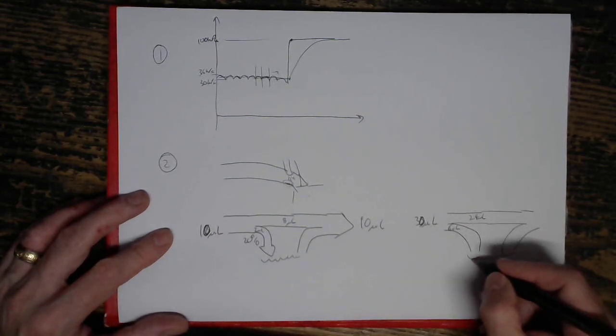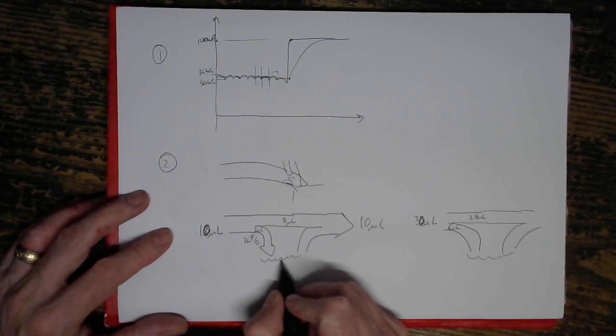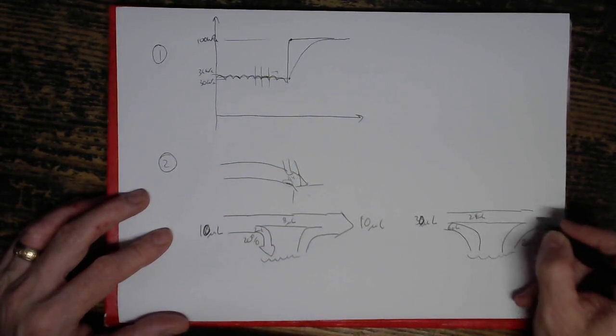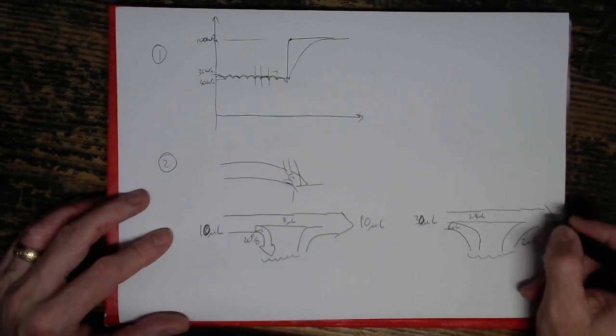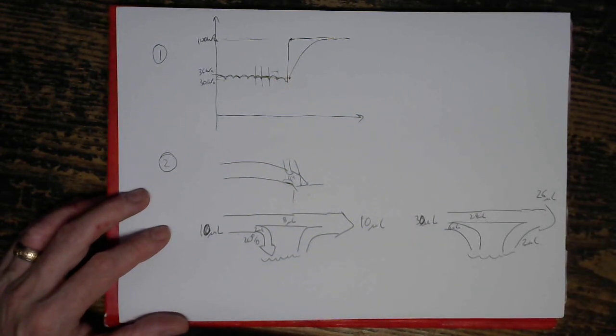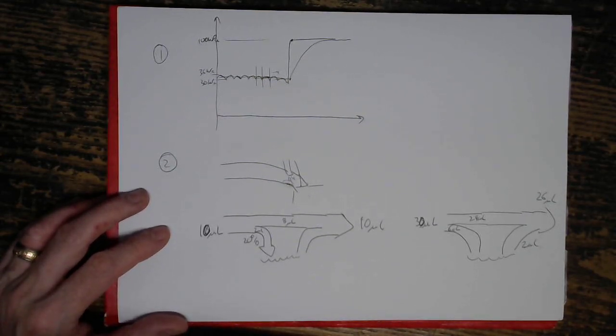Now because this puddle is still the same mass as it was here, the same amount is evaporating. So you only get 2 microlitres going off there, which means that the total you end up at the engine is 26 microlitres, which means that you don't get as much fuel as you need to.